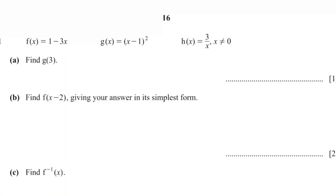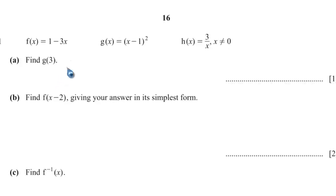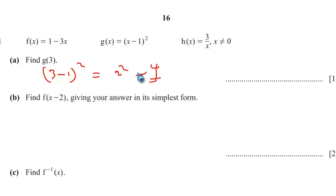This is question 11 from paper 0580/42, October-November 2023. f(x), g(x), and h(x) are given. Find g(3): substitute 3 into g(x), giving (3 minus 1) squared equals 2 squared equals 4.